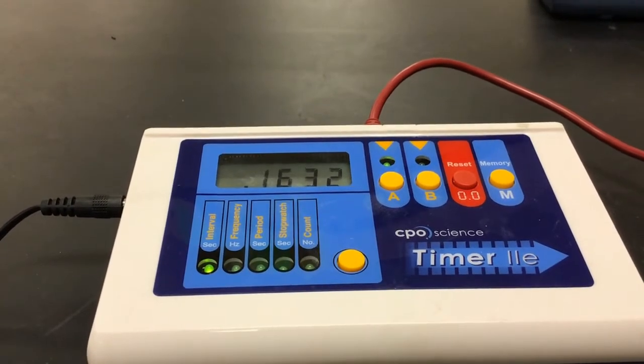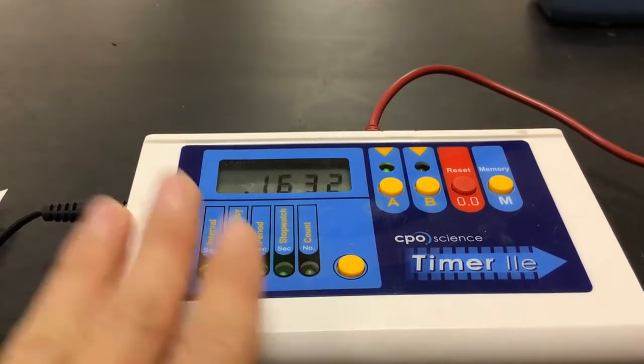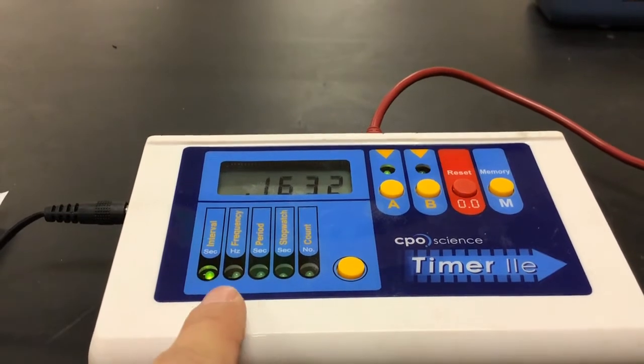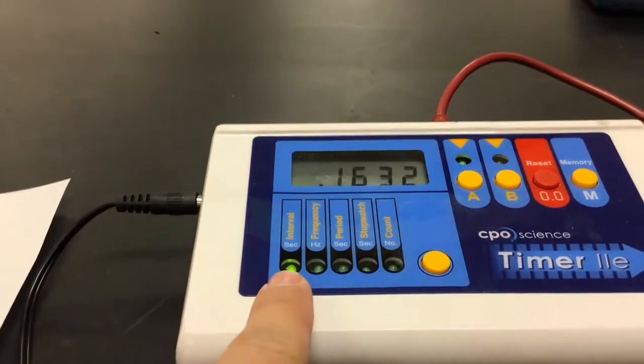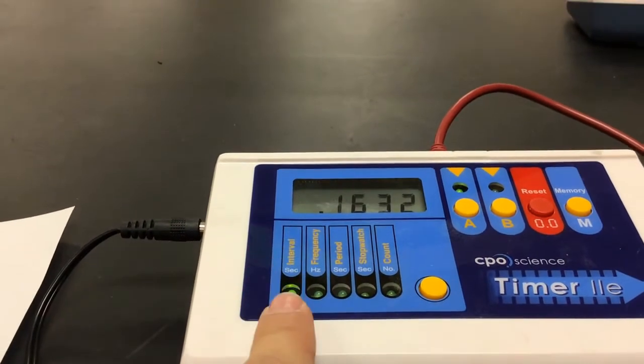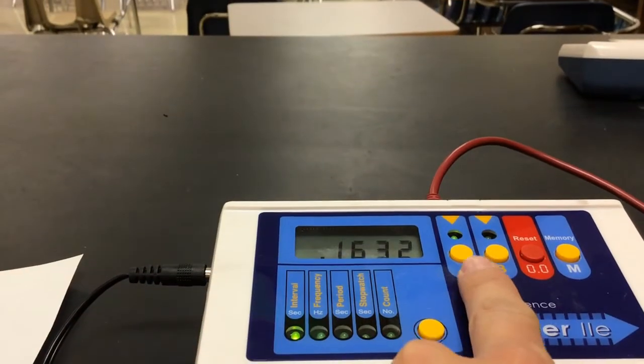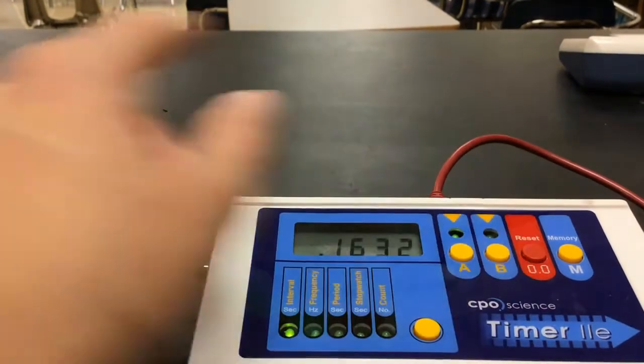Our next one is the Viking ship's swing. Again, we're using our timer. Let's make sure it's set up correctly. You want to make sure it's set to interval. We're measuring the time something is occurring, and you're going to want to make sure that A is also highlighted green.